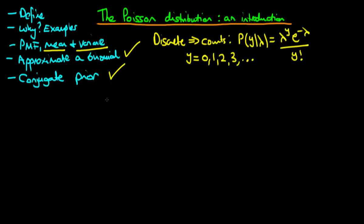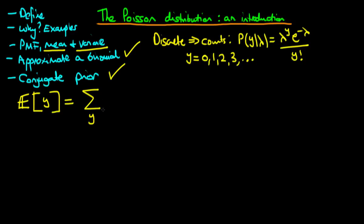To derive the mean of a Poisson distribution, since it is a discrete distribution, we sum over all values of y. Here y takes on the values 0, 1, 2, 3 up to positive infinity, and we sum y times the probability mass function — that is, y times lambda to the power y times e to the power minus lambda, all divided by y factorial.